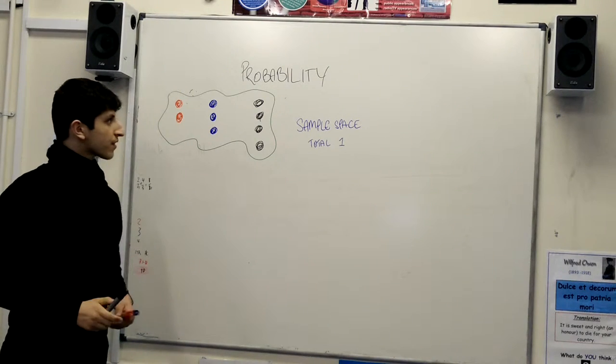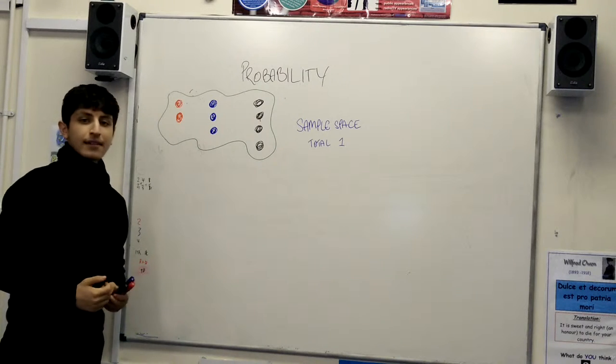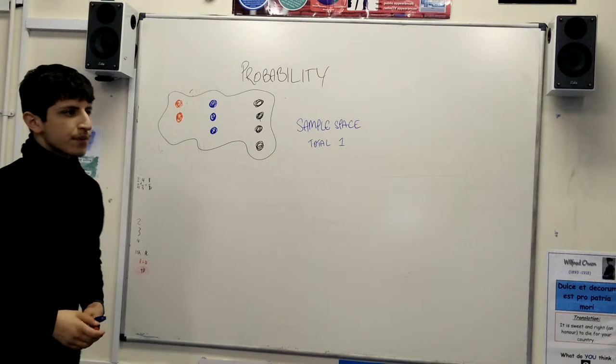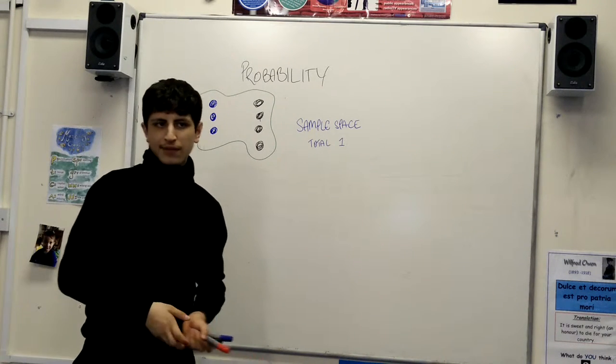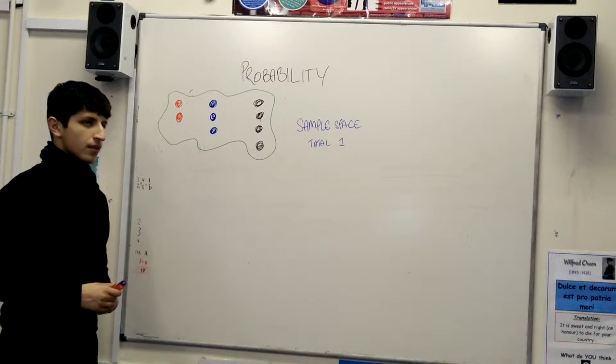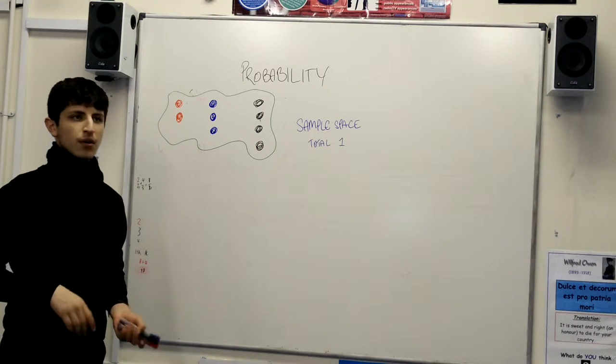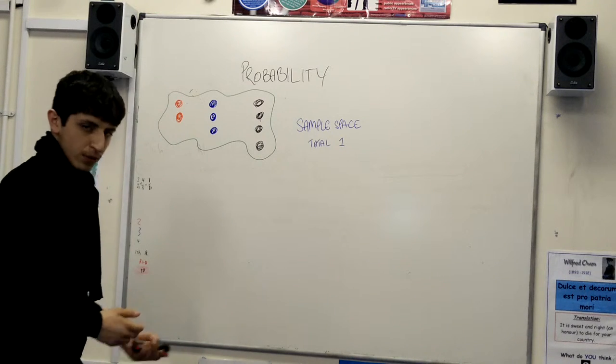In our new GCSE video we're going to be talking about probability. Probability is the chance of having an event or the outcome of an event. An event could be for example having heads or tails on the coin. Now you know that the chances of getting heads are 50% because you need to get a head or a tail. So they both are split between two, 1 divided by 2, 0.5 or a half.